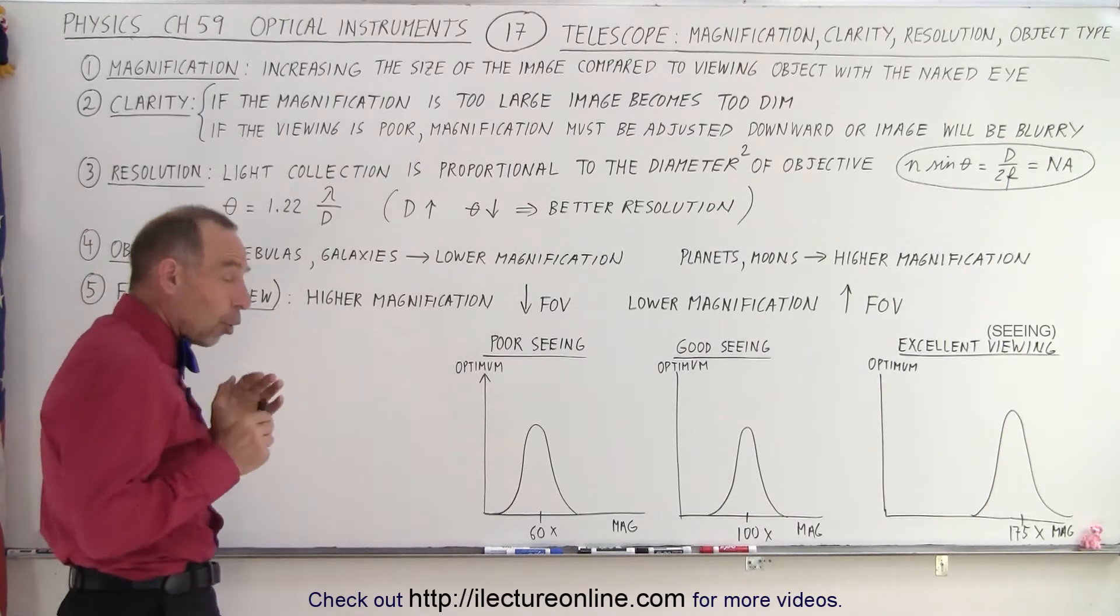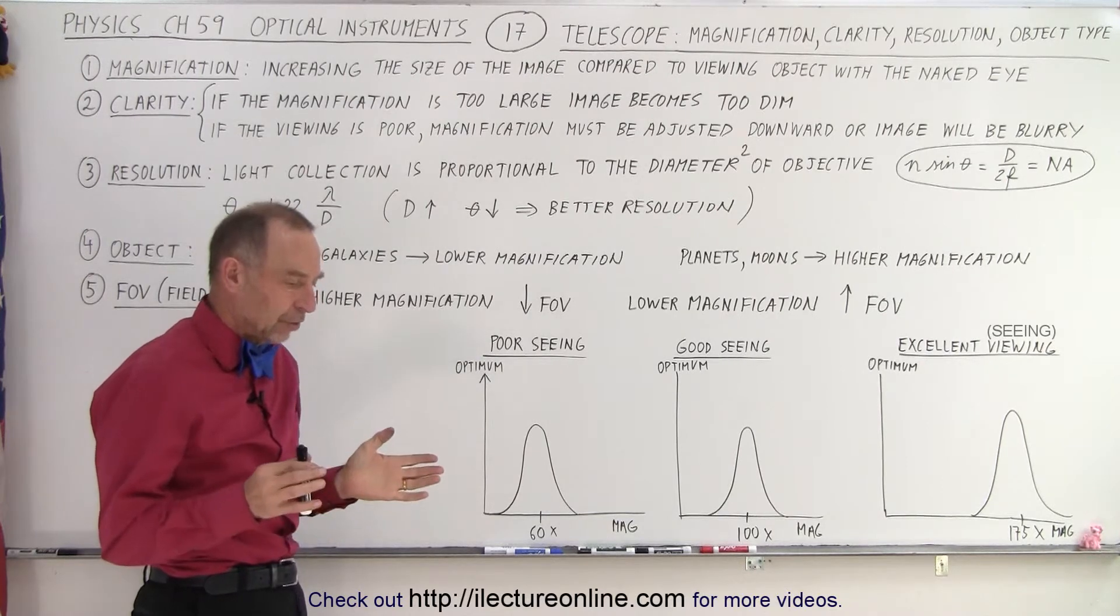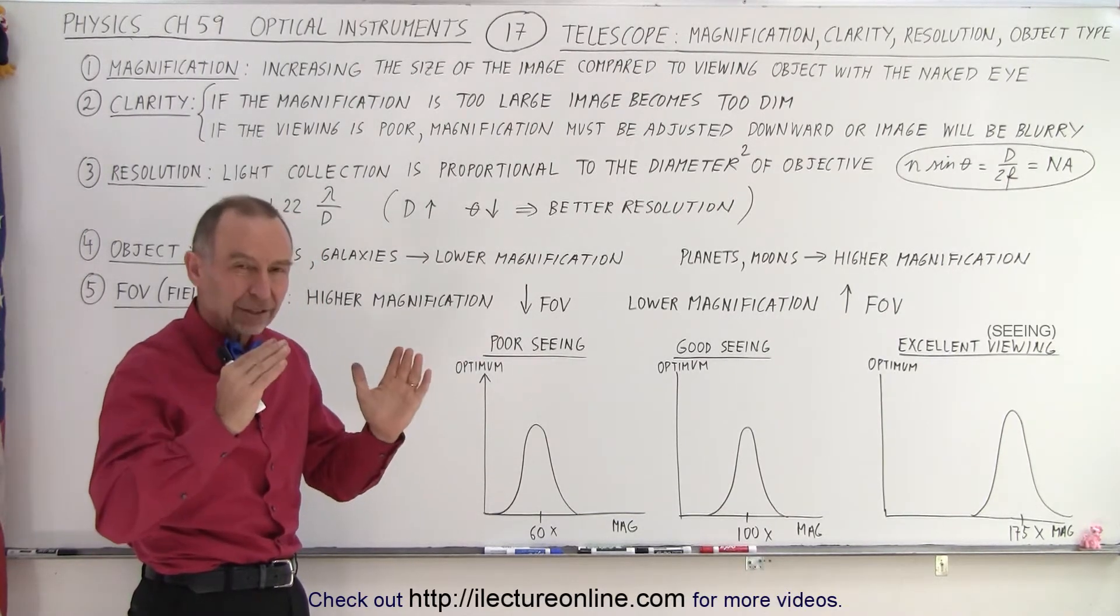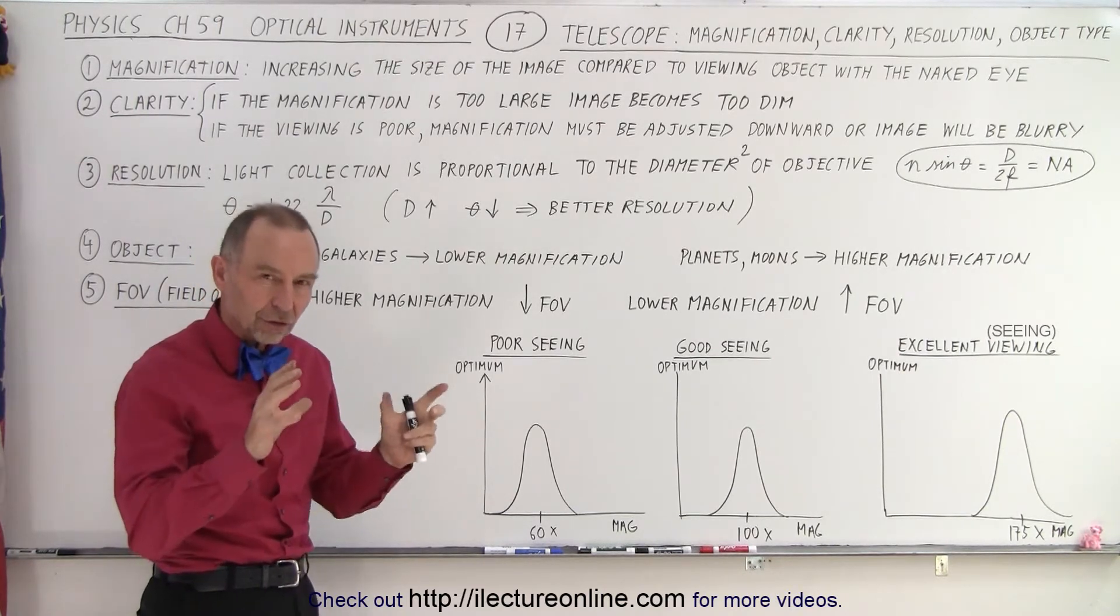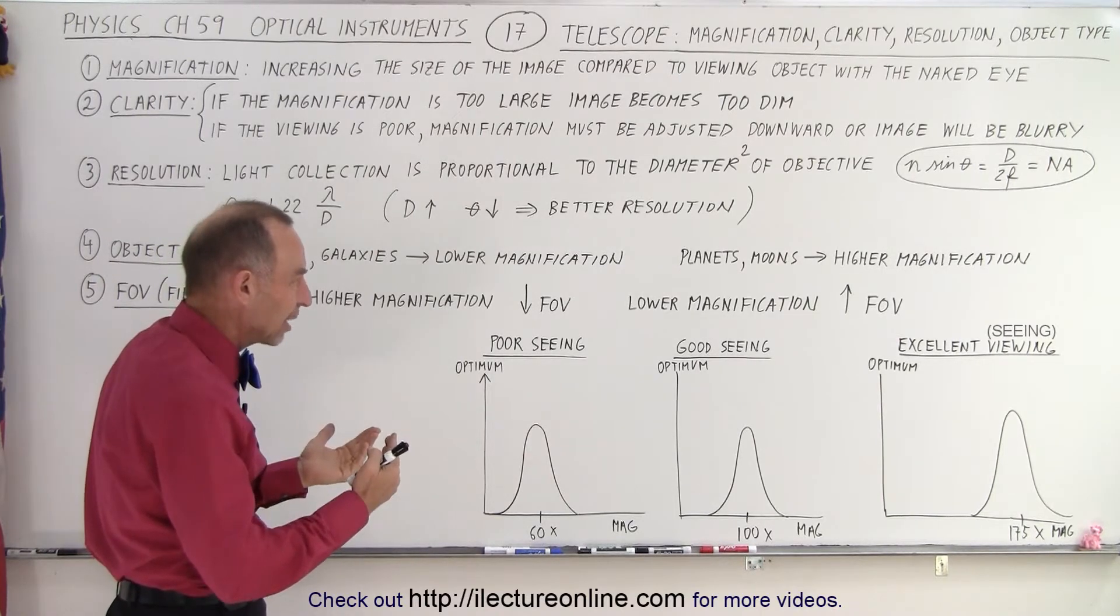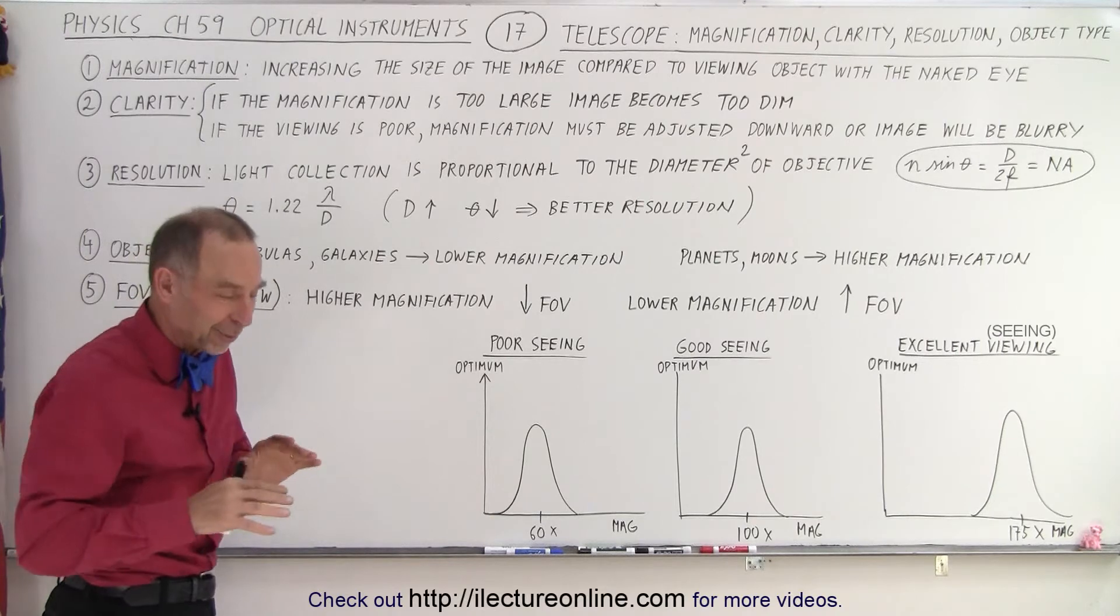The object you're looking at also will determine what kind of magnification you want. Because if you're looking at a planet or a moon where the surface is clear and the features are solid, then you can go to a higher magnification. But if you're looking at things that are more nebulous, like nebulas, well when they're a little bit more diffused—there's gases and the detail isn't as easy to discern—